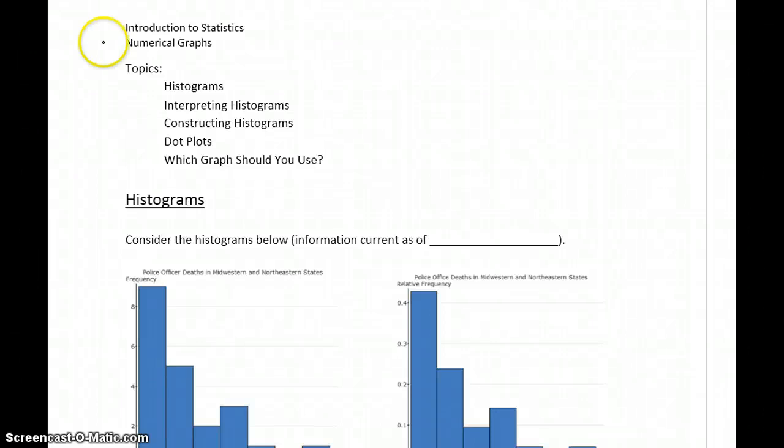In this section we want to talk about types of graphs, specifically graphs that we can use to help visualize numerical data, so data that can be ordered or ranked.